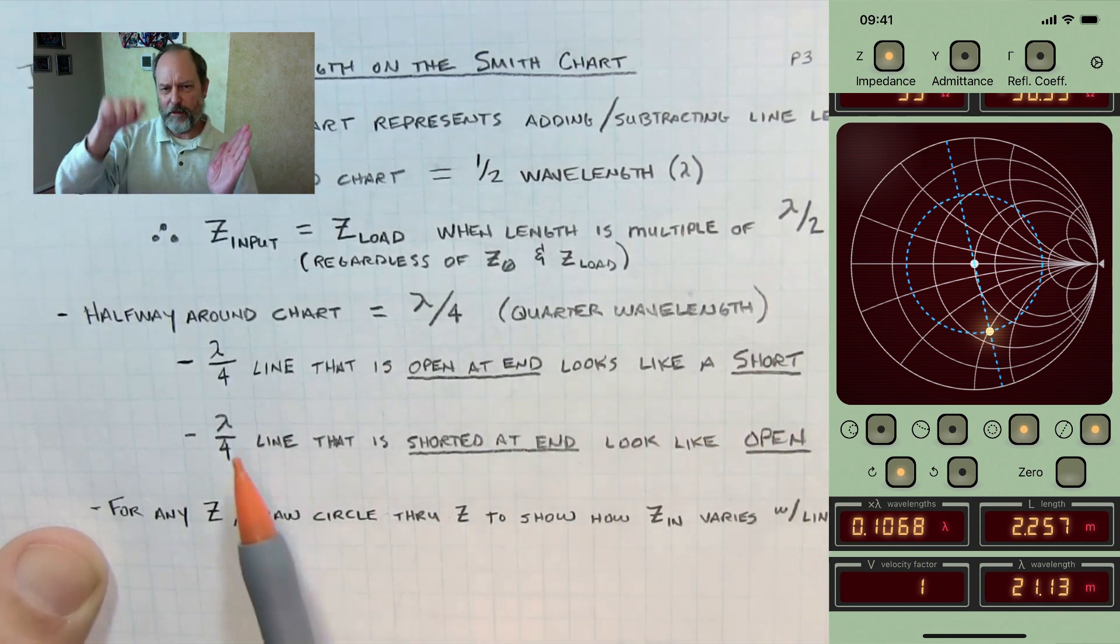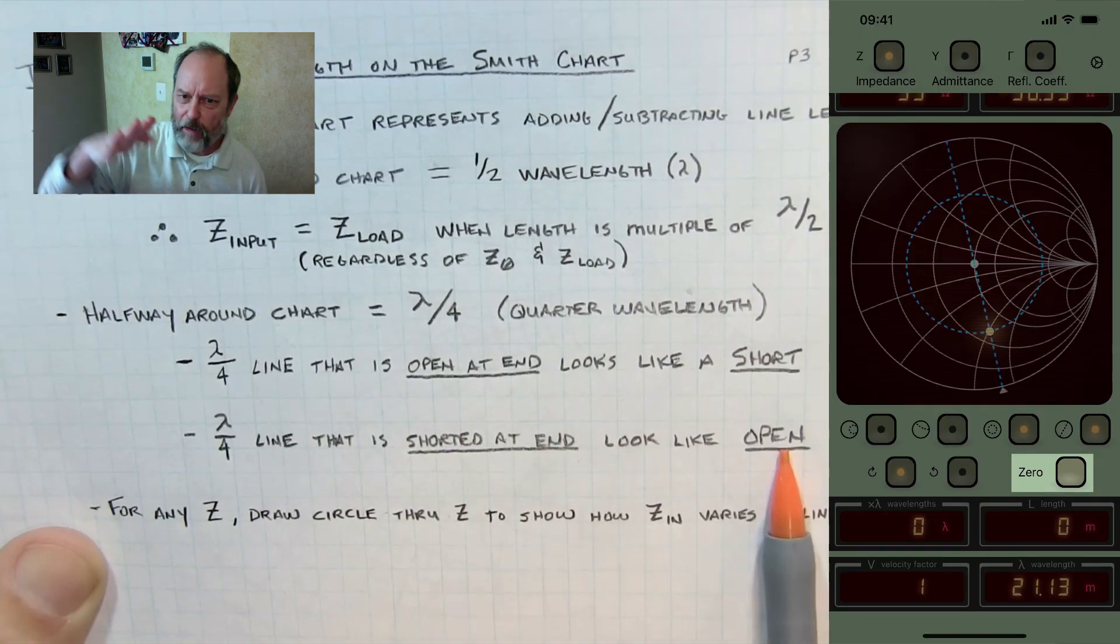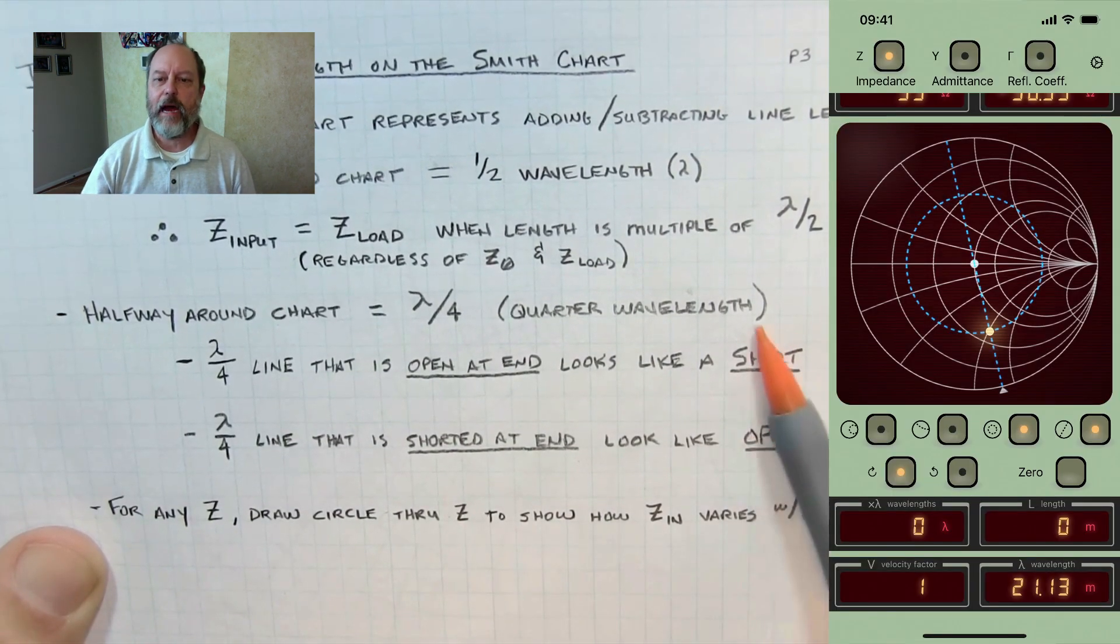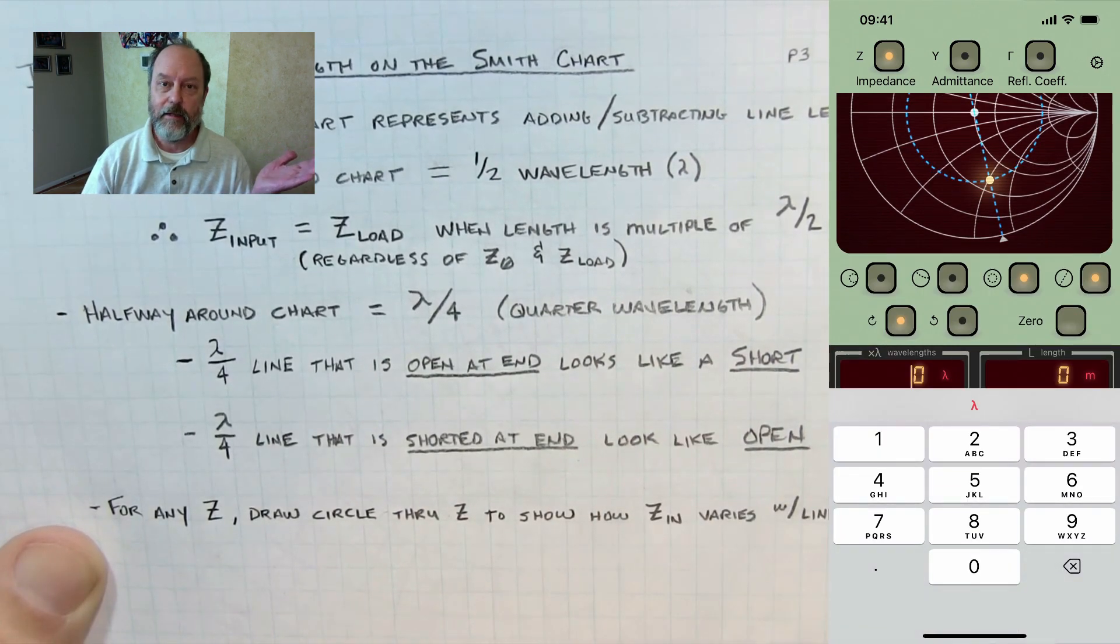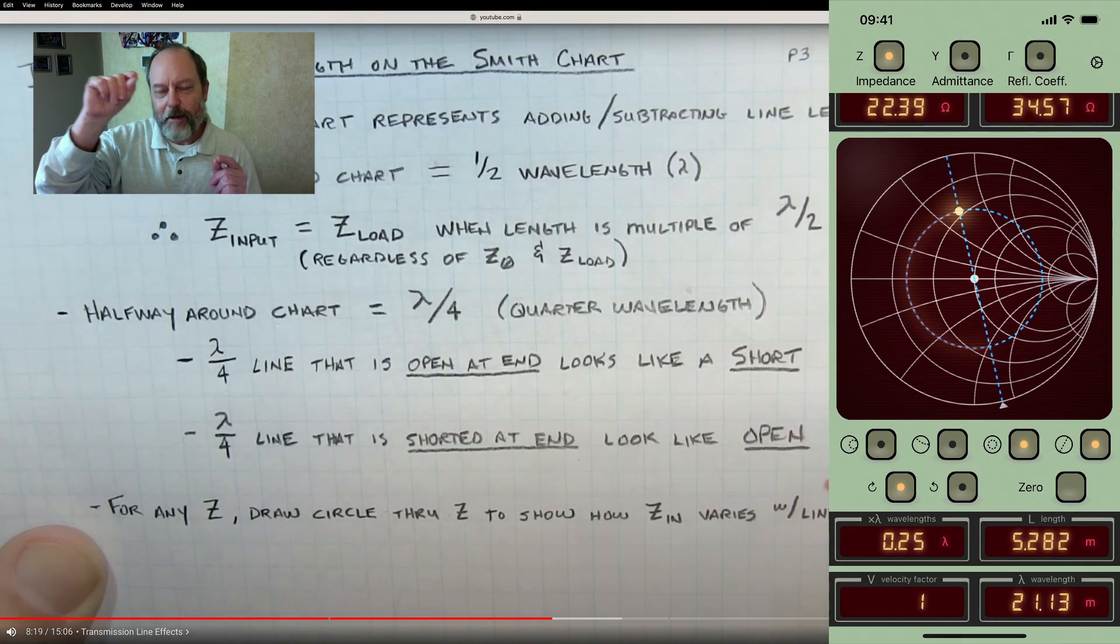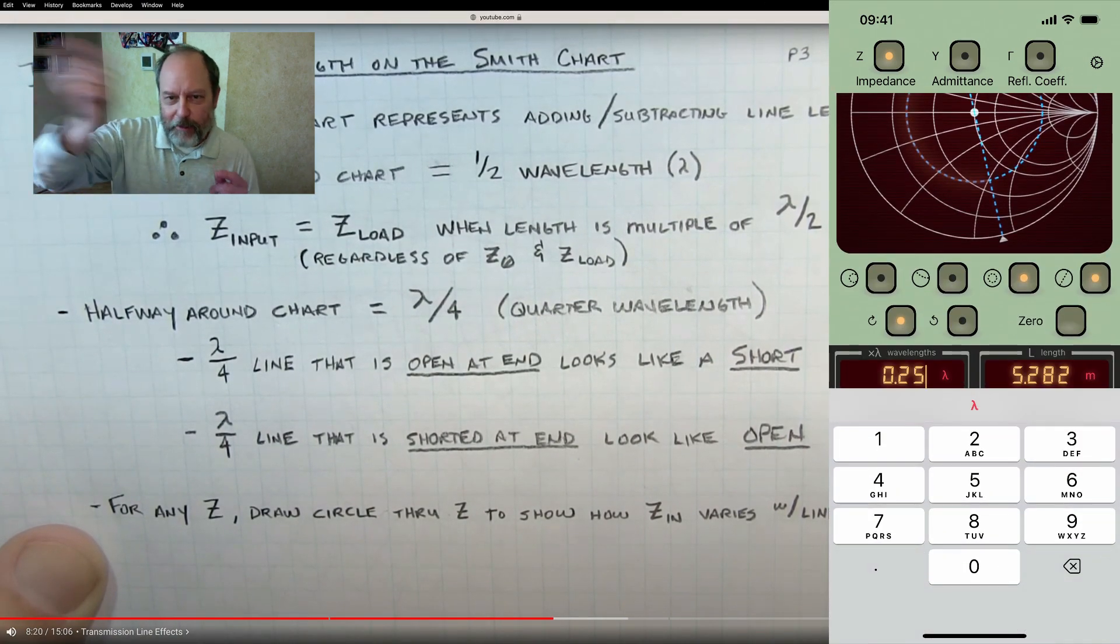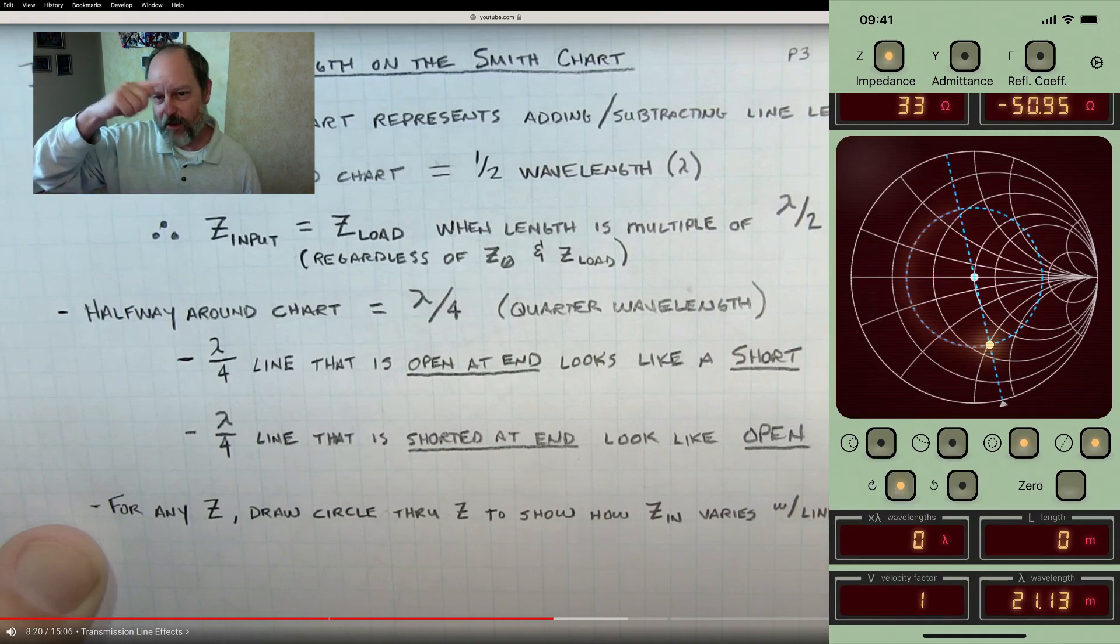So what we're going to first do is tap the zero button in the app to set the zero point for where we're measuring wavelengths from. And now if I enter a quarter wavelength, you can see that this gets us to the other side. And this would have helped earlier when I was trying to use that little trick to do the reciprocal of a complex number to get from impedance to admittance. But that's how you could get to the other side.